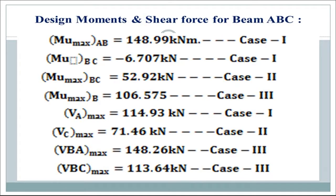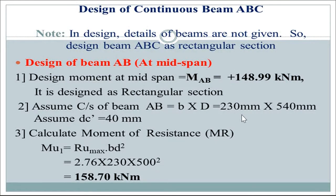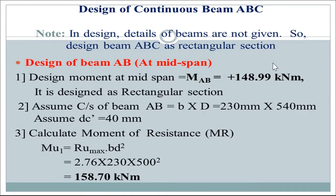Once we get the maximum bending moment at mid-span and support, we can start the design. Since details of the beam are not given, we design beams AB and BC as rectangular sections instead of flanged sections. Design moment at mid-span of AB = 148.99 kNm. Cross-section assumed: 230 × 540 mm. Assuming dc' = 40 mm, we calculate the moment of resistance for the balanced section: RUmax for M20 and Fe415 gives MR = 2.76 × b × d² = 158.70 kNm. Since design moment 148.99 < 158.70, we design a singly reinforced section.